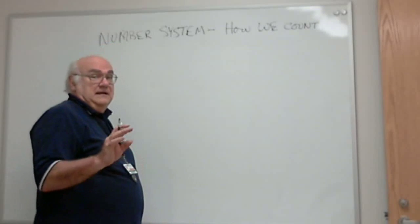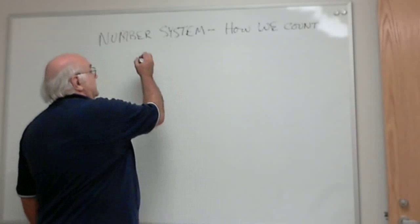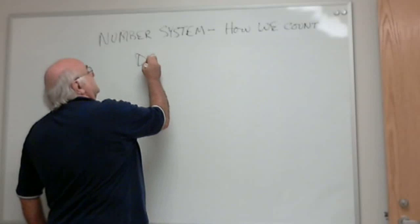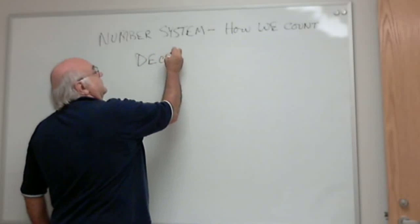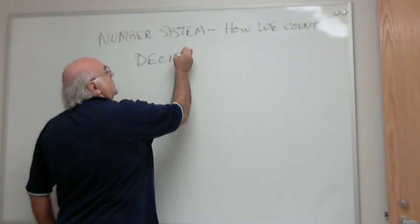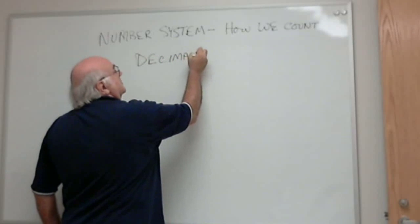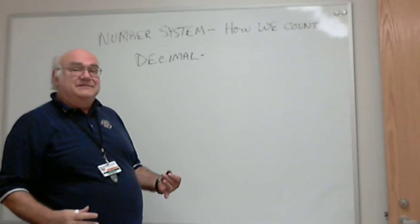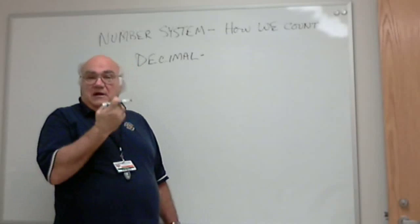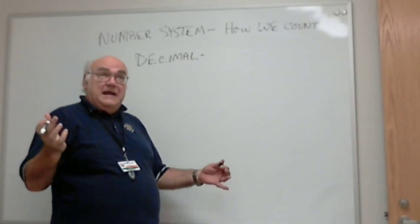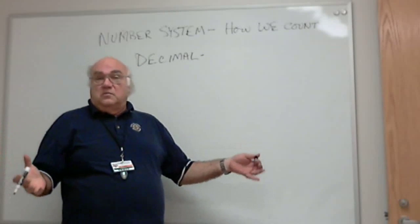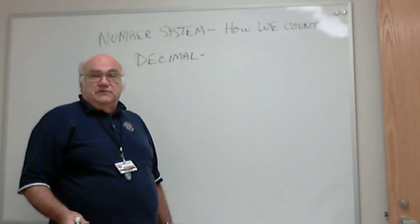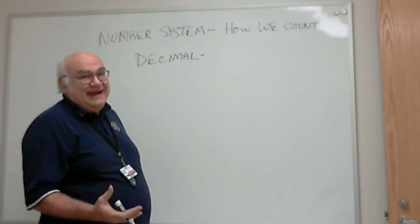We count in the decimal system. So for the next few minutes, we're going to talk about the decimal numbering system. What makes it a decimal system? Decimal comes from the Latin or the Greek, one of those old dead languages, meaning ten.